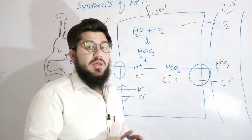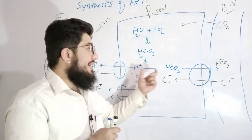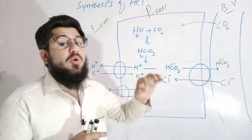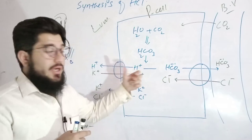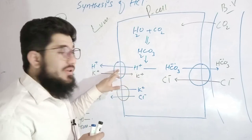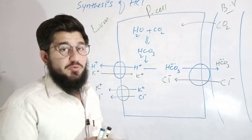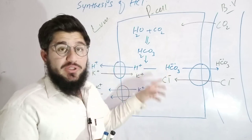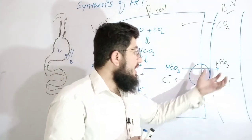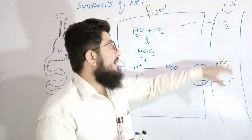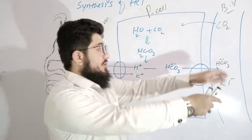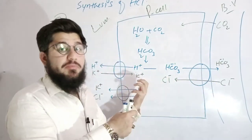Both ions are moved by the help of antiport transporters. Antiport transporter number one is the bicarbonate-chloride antiport transporter, and antiport transporter number two is the H⁺/K⁺ antiport transporter. Bicarbonate moves towards the blood vessel, while chloride is transported from the blood into the parietal cells. From the parietal cells, bicarbonate moves toward blood, and from the blood, chloride moves into the parietal cells.